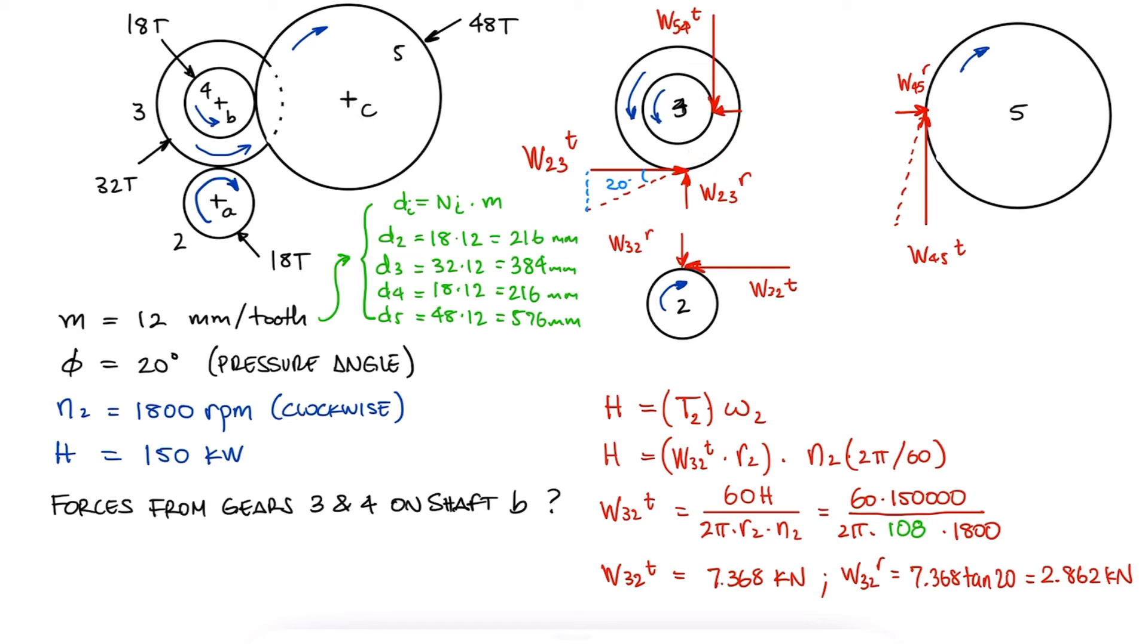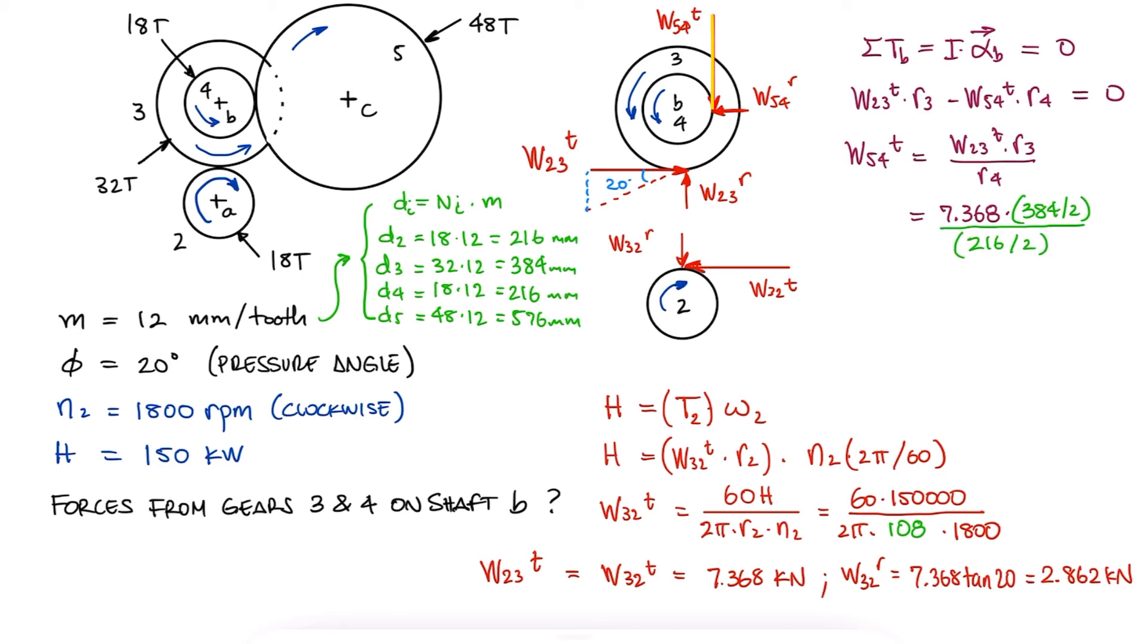Since gear 4 is actually on the same shaft as gear 3, and since shaft B is not angularly accelerating, meaning that its angular acceleration is zero and therefore the sum of torques is zero, we see that W23t times the radius of gear 3, which is a positive torque, minus W54t times the radius of gear 4, negative since it's a clockwise torque, is equal to zero. With the radii of the gears and the tangential component of the interaction force between gears 2 and 3, we find the tangential component of the interaction force between gears 5 and 4.